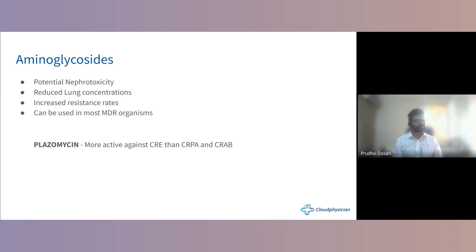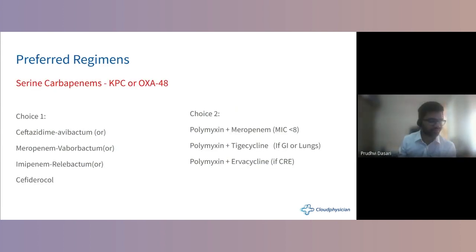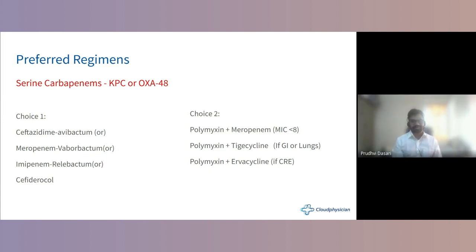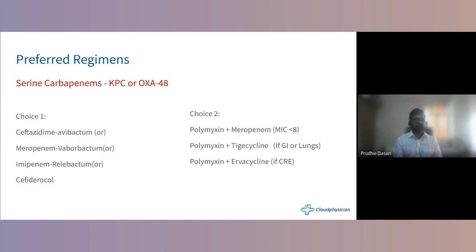Preferred regimens: for serine carbapenemases — KPC or OXA-48 — the first choice is ceftazidime-avibactam. If unavailable, choice two is polymyxin with meropenem, provided MIC is less than 8 — which is why checking the minimum inhibitory concentration is critical. Alternative combinations include polymyxin with tigecycline when MIC is not favorable, or when treating GI or lung infections.